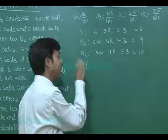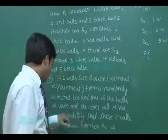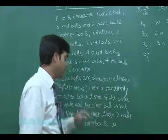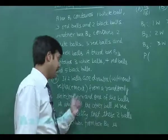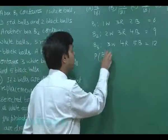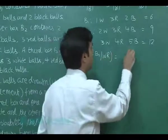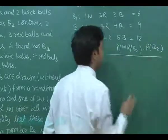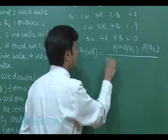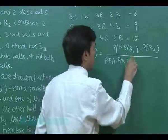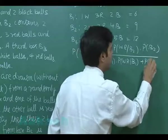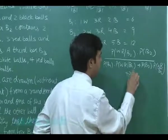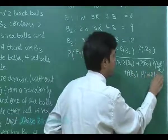Question is talking about find the probability that these two balls are drawn from box B2. We have to find the probability that balls are drawn from box B2 and what are the balls? Balls are of the type one is white and other is red. Probability B2 by white red is simply equal to probability white red from B2 into probability of getting from box B2 divided by probability from B1, white red from B1 plus probability of B2, white red from B2 plus probability of B3, white red from B3.